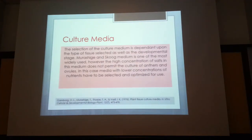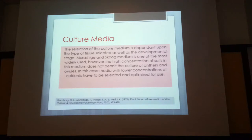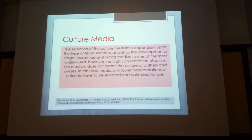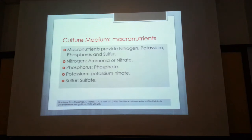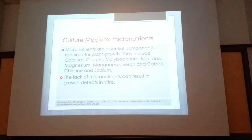One of the most classical culture media used is Murashige and Skoog (MS) medium. We also have Vacin and Went (Vassinwand) and Gamborg's media. Orchid tissue may require Vacin and Went, which has a lower nutrient concentration, since too much ammoniacal nitrogen like ammonium nitrate may burn certain tissue. For general tissues like rice or seeds, Murashige and Skoog is used. Media must be subcultured every one to two weeks as it is consumed by the growing tissue.